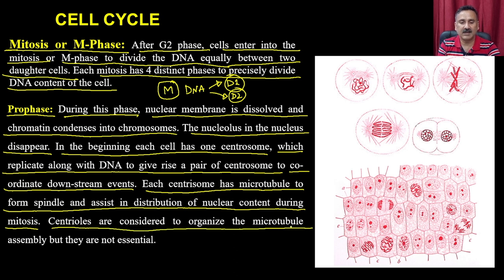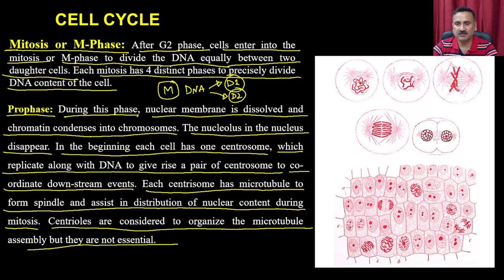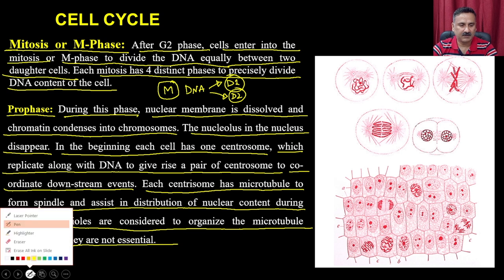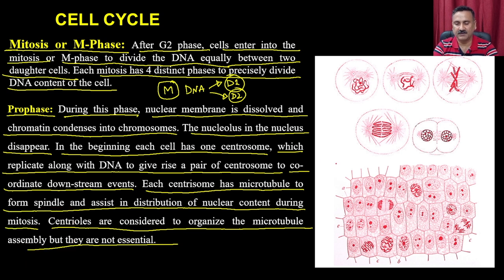Each centrosome has microtubules to form the spindle, which assists in the distribution of nuclear content during mitosis. Centrioles are considered to organize microtubule assembly but are not essential. During prophase, the nuclear membrane is removed so the two copies of DNA inside the nucleus become free for distribution. The different phases of mitosis are prophase, metaphase, anaphase, and telophase.